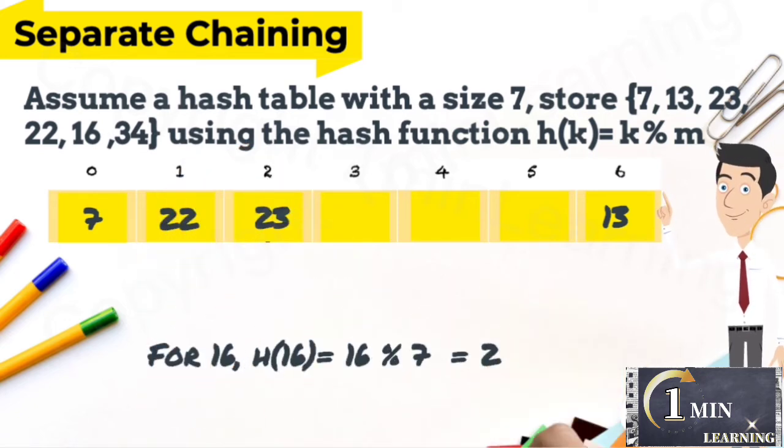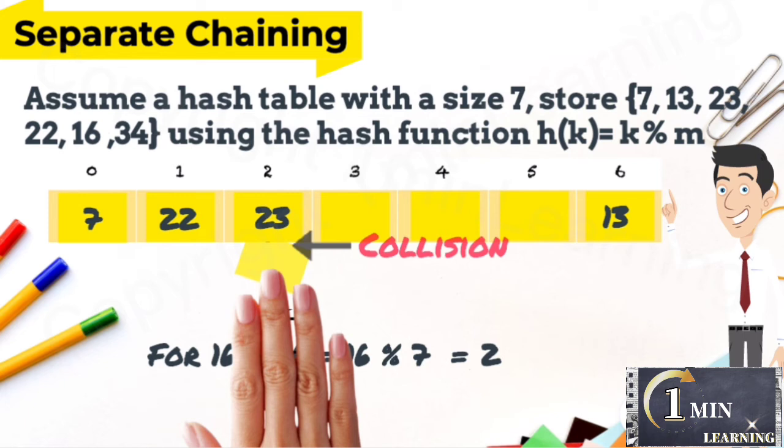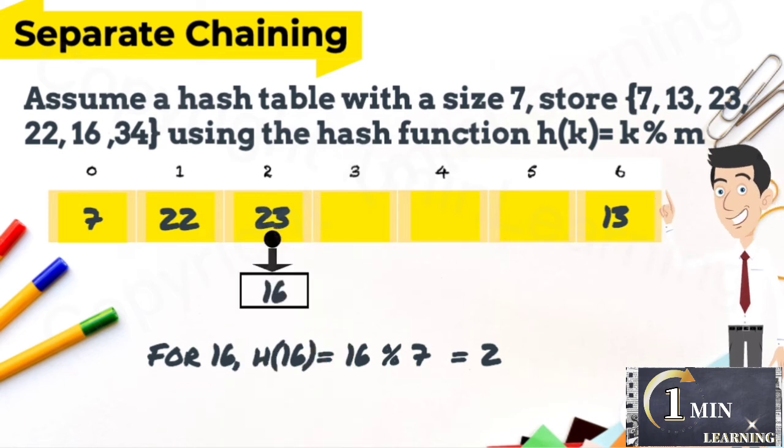For 16, it's supposed to store at index 2. There is a collision. So that index will be extended as a linked list. 16 is inserted in that linked list.